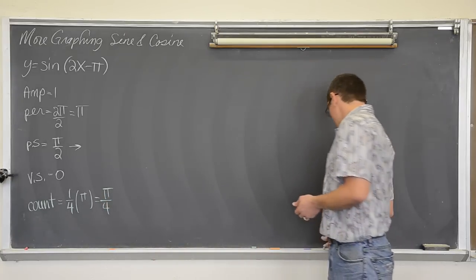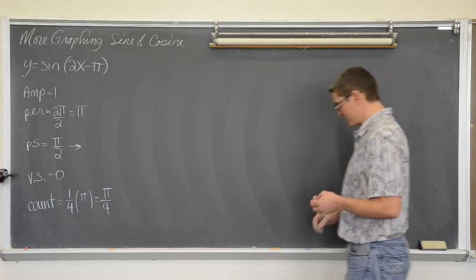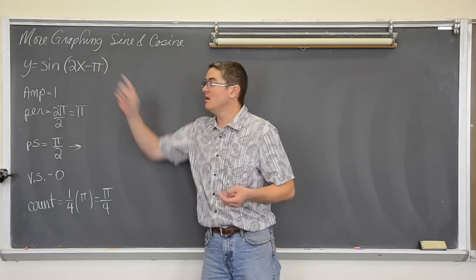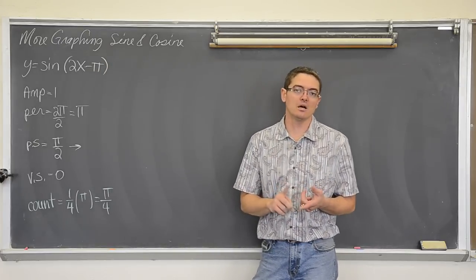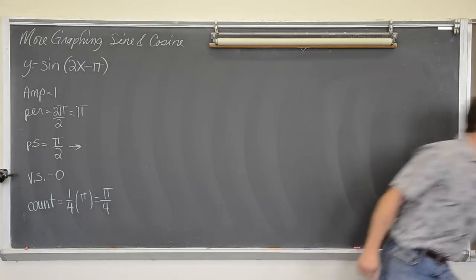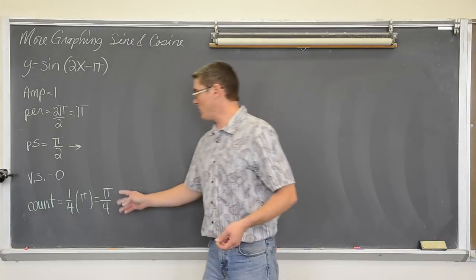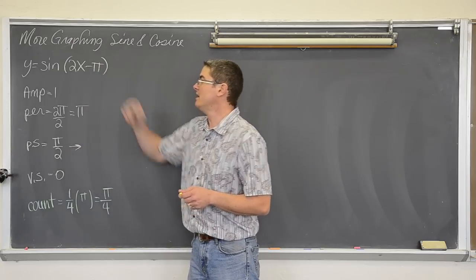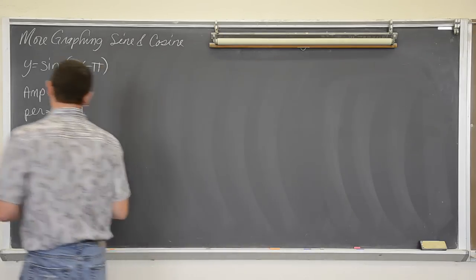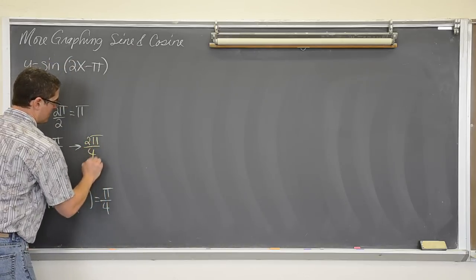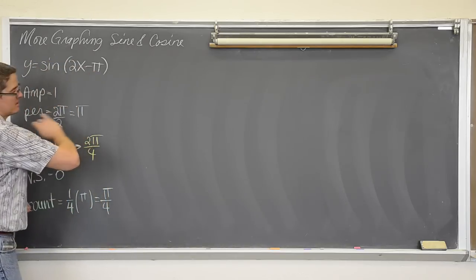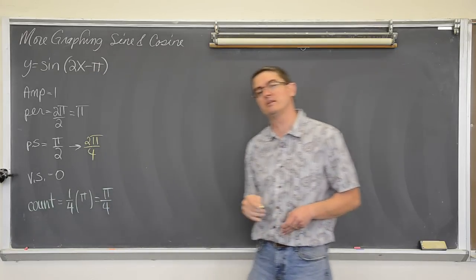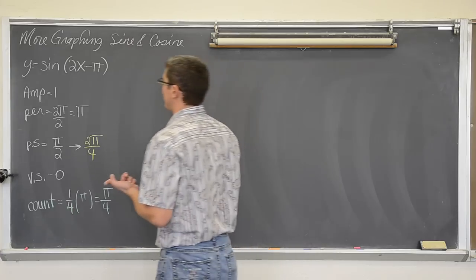To alleviate the amount of mental math I have to do, I am going to write my phase shift, my count value, and c all with matching common denominators. So we have π over 4, π over 2, and π. The common denominator between all of these values is π over 4. So I am going to write the phase shift as 2π over 4, and in the t-table I am going to write the period as 4π over 4. The count, phase shift, and c should all be written with a common denominator to make the mental math a little bit easier.